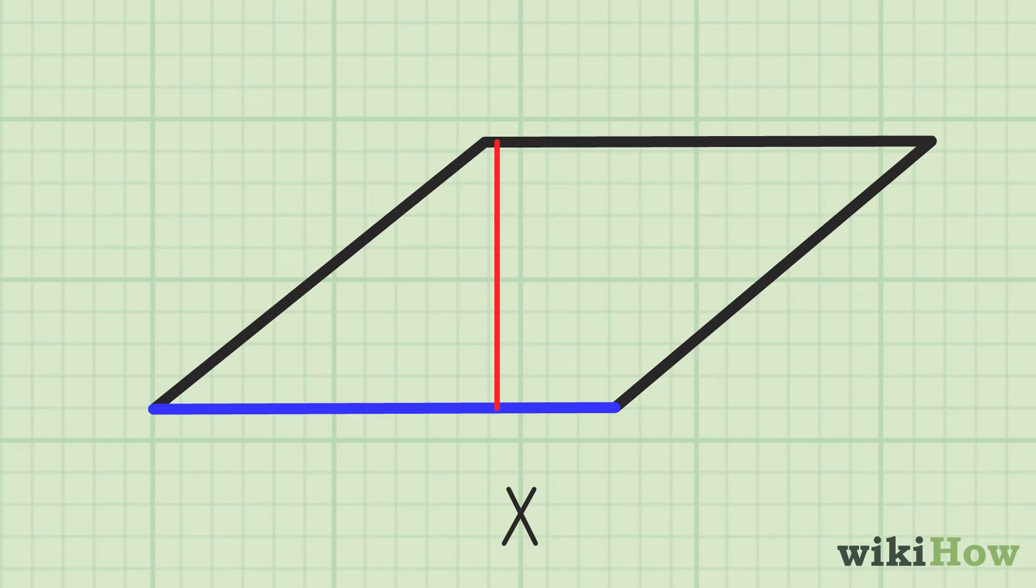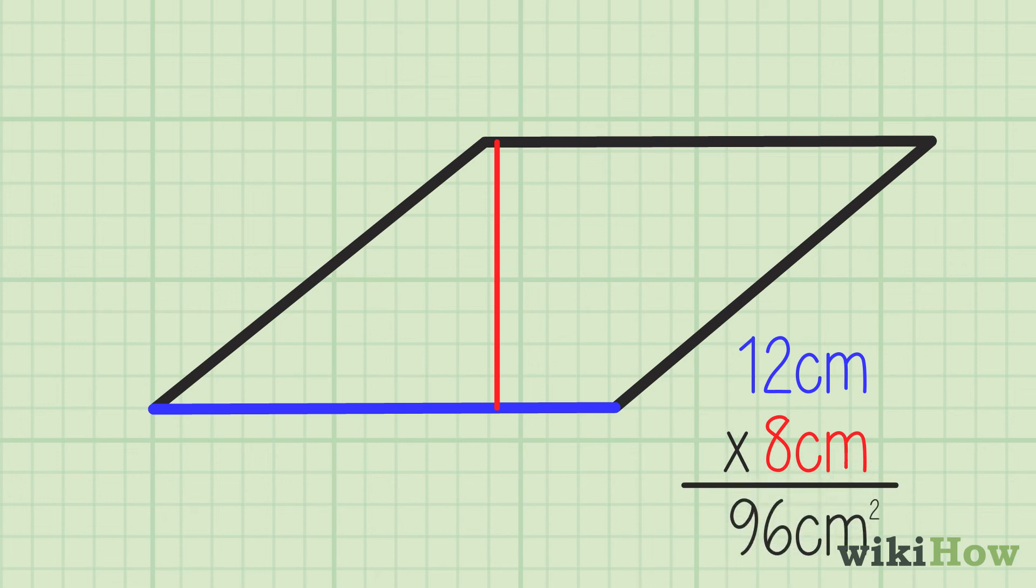For instance, if a rhombus is 12 centimeters long at the base and has a height of 8 centimeters, the area of the rhombus would be 96 centimeters squared.